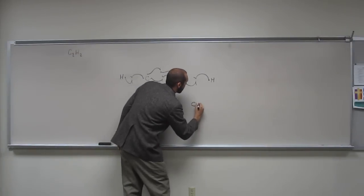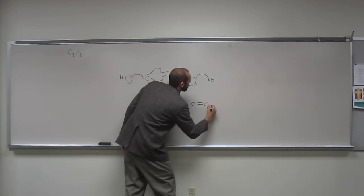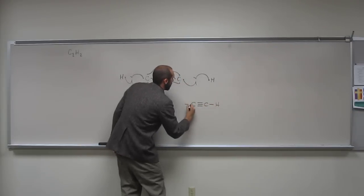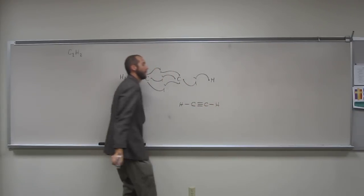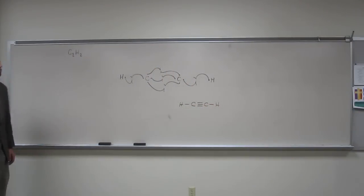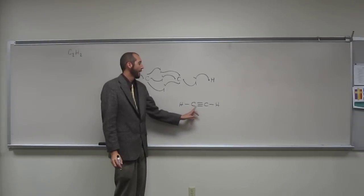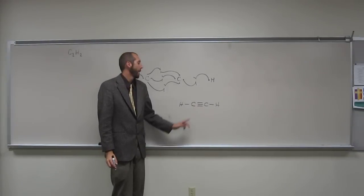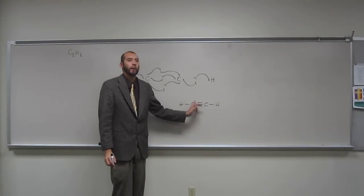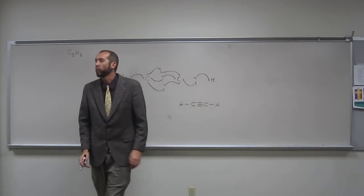This molecule that we're building is called acetylene. If you've ever used a welding torch, you've used this stuff. So, how many electron groups do you have around this carbon atom? Electron groups, remember.